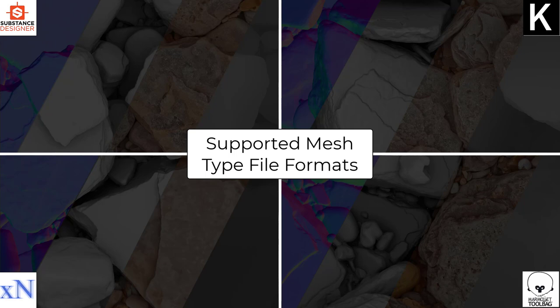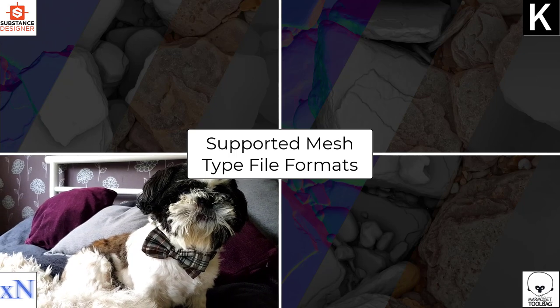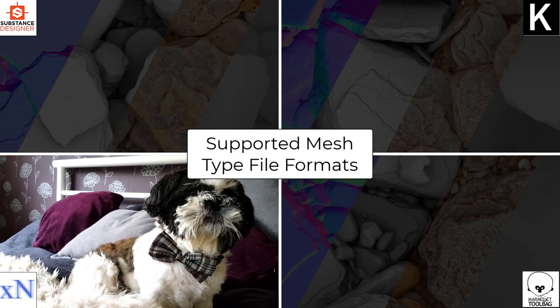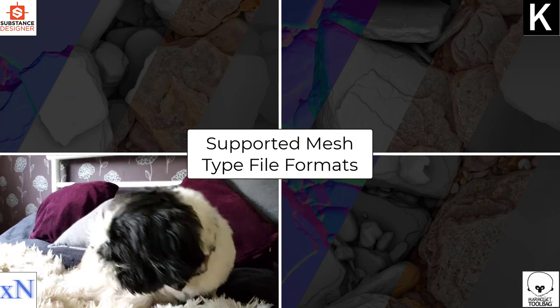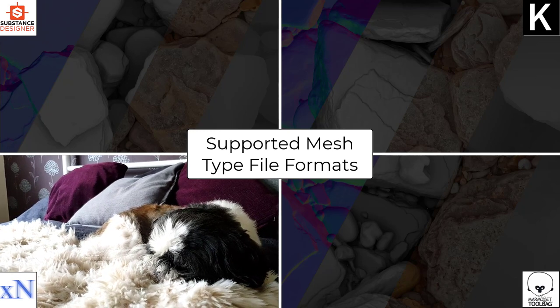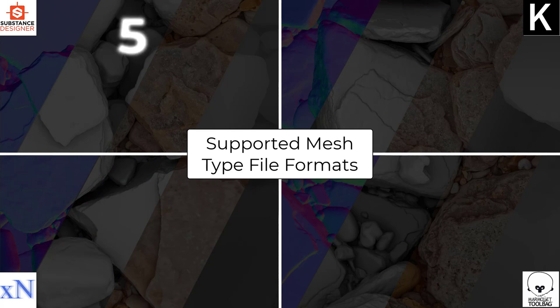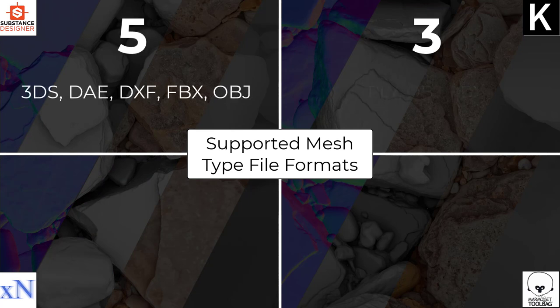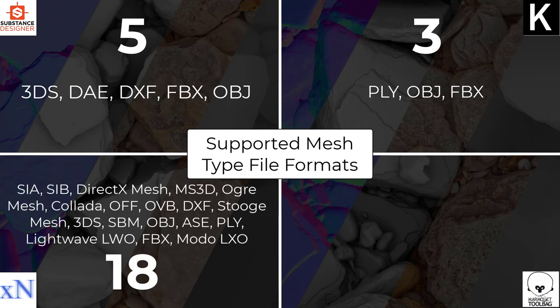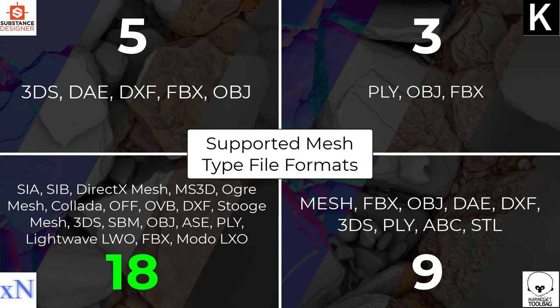The next factor is supported mesh file formats — important because if the baker can't load your high poly format, it's useless. Substance Designer supports 5 file formats, Knalt supports just 3, XNormal supports 18 which is exceptional and makes it the most versatile option, and Marmoset Toolbag 3 supports 9. XNormal clearly rules here. Substance isn't bad but lacks PLY format, which is key for very heavy high poly data. Interestingly, Knalt supports PLY in its 3 formats, potentially making it a better solution than Substance for photogrammetry users despite fewer total formats.